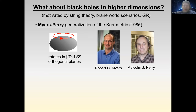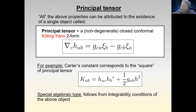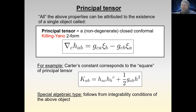An audience question asks whether there are non-black-hole solutions in 4D with irreducible Killing tensors. The answer is yes — for example plane waves and Taub-NUT spacetimes admit Killing tensors — but Kerr is arguably the most interesting. The talk then turns to higher-dimensional generalizations, where the beautiful geometric structure behind these solutions becomes apparent.